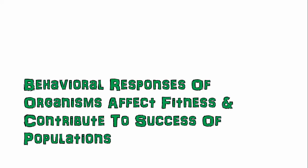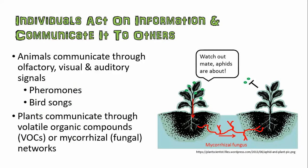Behavioral responses that organisms have can affect the fitness of an organism and help it contribute to the success of a population. Organisms can not only act on the information and formulate a response to whatever stimulus they encounter, but they can also communicate that to others. Animals do a lot of this with either chemical signaling like pheromones or something audible like bird songs, or visual signals. Plants, we are finding more and more, can actually communicate with each other in really complicated ways that we're only just starting to realize.